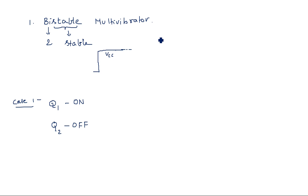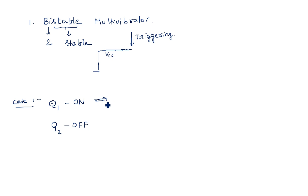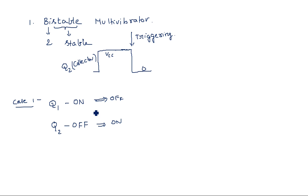Until you disturb it with an external signal, this state is permanent for an infinite duration. The external signal used to change the state is called a triggering pulse. When a triggering pulse is applied, the ON transistor becomes OFF and the OFF transistor becomes ON — the states of the two are altered.